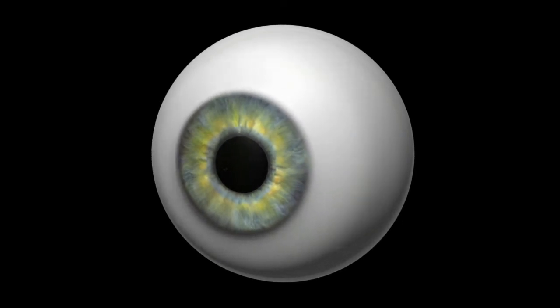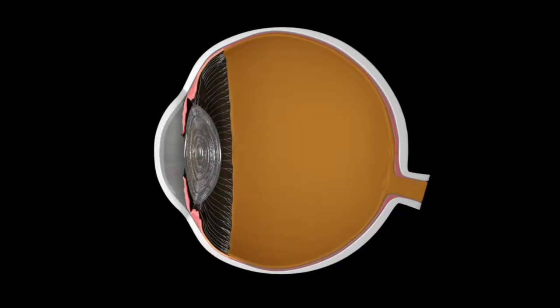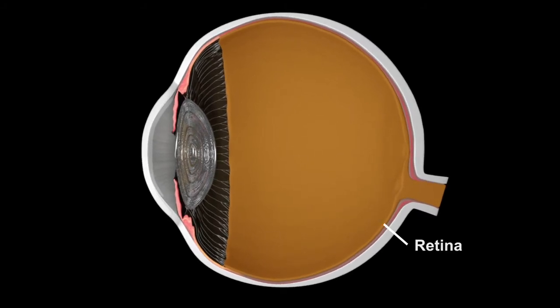The human eye is a complex organ that provides visual sensory information to the brain. Each part of the eye performs a specific function.